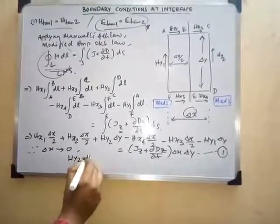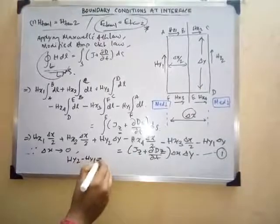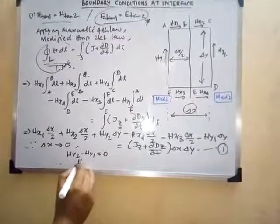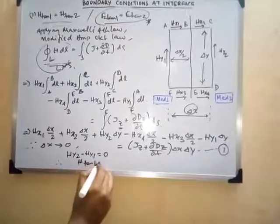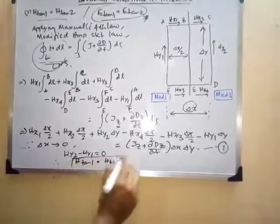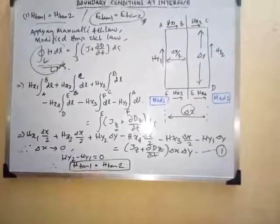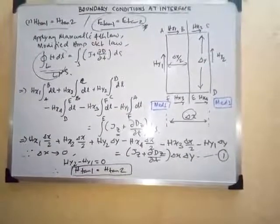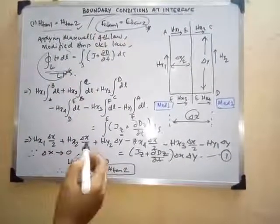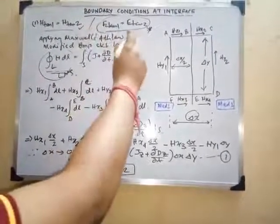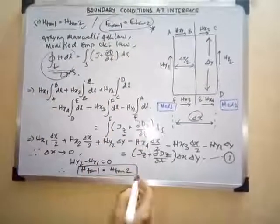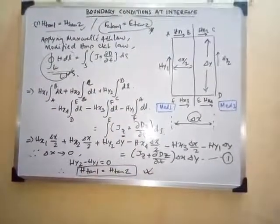Since del_x tends to zero, putting the values of del_x in the expression, we arrive at H_y2 − H_y1 = 0, and therefore H_tan1 = H_tan2. This completes the proof of the boundary condition related to magnetic field. Similar to the electric field boundary conditions, if they ask for proof of H_tan1 = H_tan2, this derivation applies.